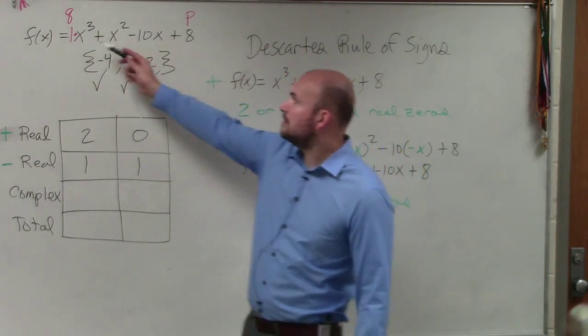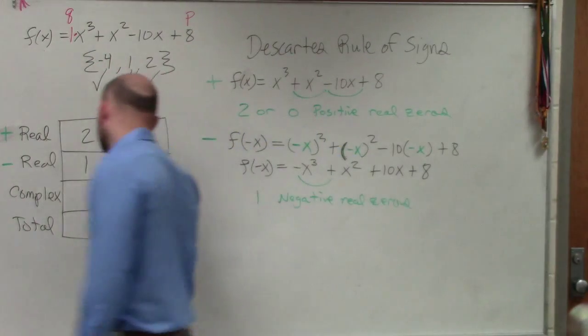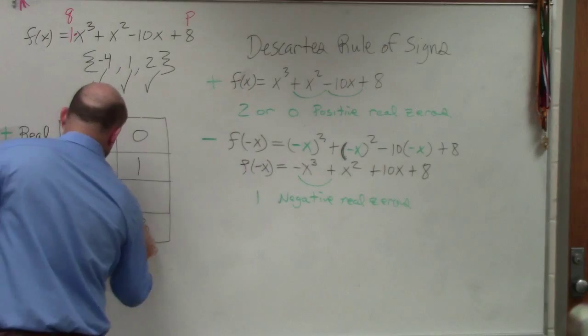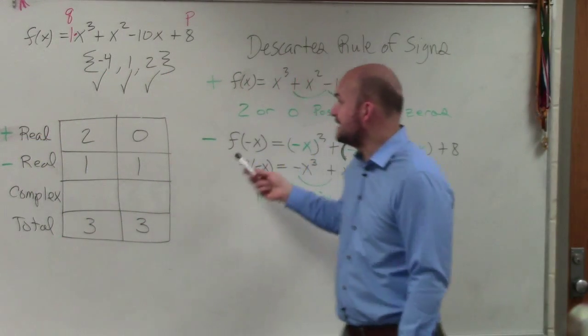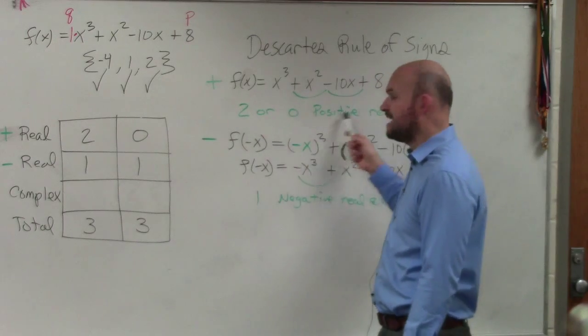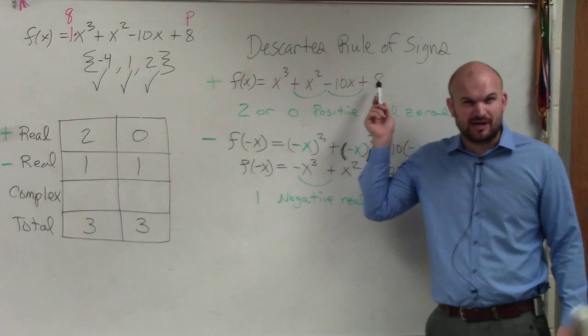Guys, degree three gives us how many zeros? Three. Three. So by using Descartes' rule of signs, I was able to determine there's either two or zero positive real zeros based on the sign change of the polynomial. Is everybody okay with that?